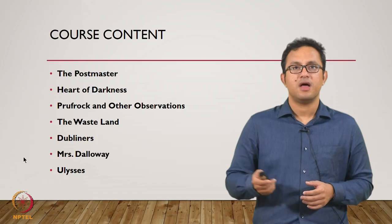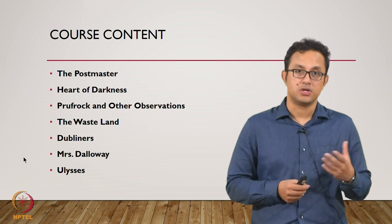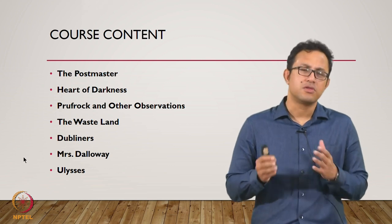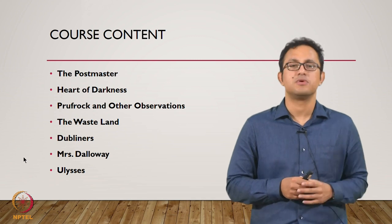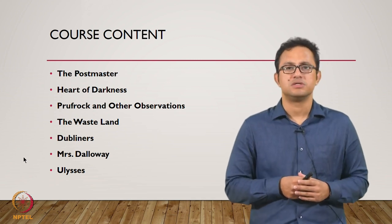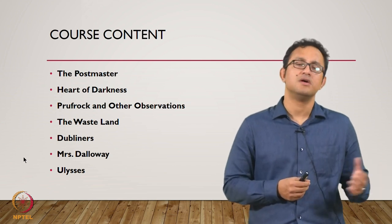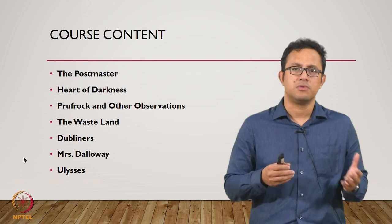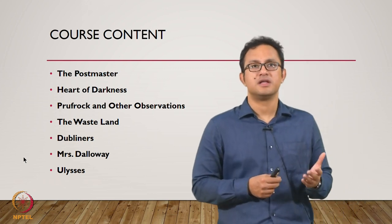At the very outset, let me take you through the texts covered in this course. We have, for instance, 'The Postmaster' by Rabindranath Tagore — a very short story which is an interesting reflection of colonial Bengal as set in the story, and a very interesting human relationship between a colonial employee, the postmaster, and a rural girl, and how that relationship and its empathy is reflective of the political and cultural conditions of Bengal at that time.